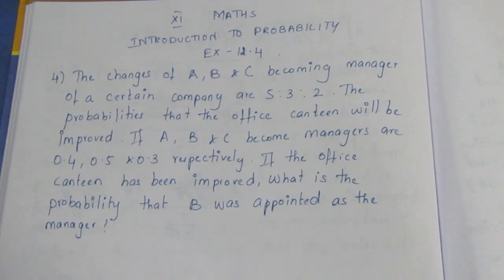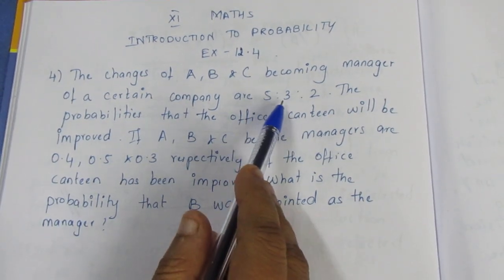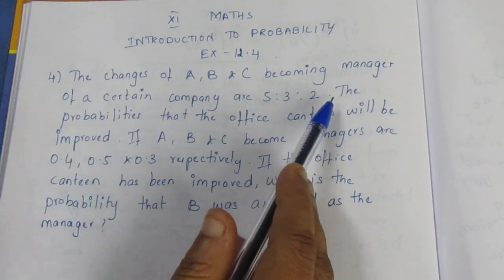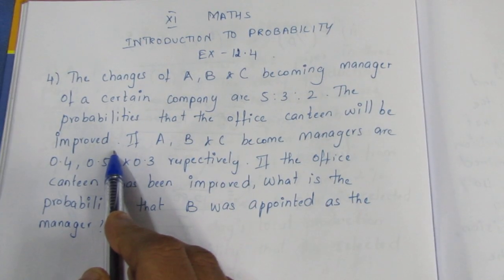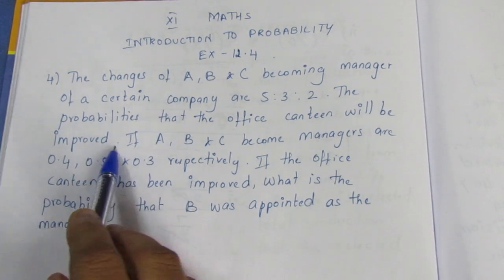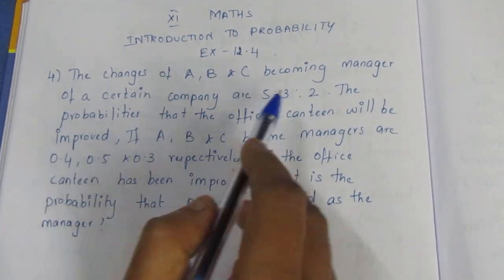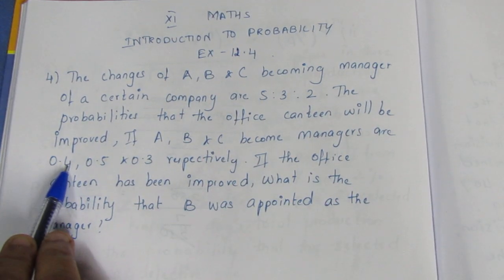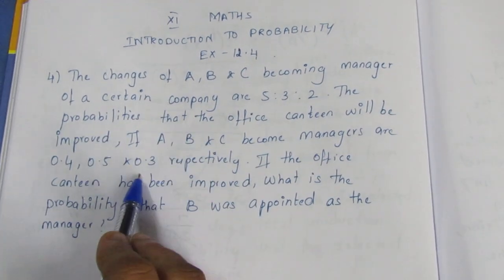Question: the chances of A, B and C becoming manager of a certain company are in the ratio 5:3:2. The probability that the office canteen will be improved if A, B and C become managers — if A is the manager the office canteen will improve with probability 0.4, if B comes it is 0.5, and if C comes it is 0.3 respectively.